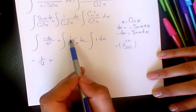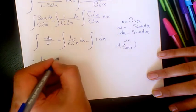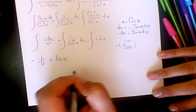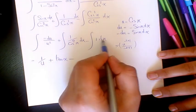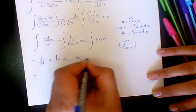Plus, the integral of 1 over cosine squared x dx, we had it before, is going to be tan x. And the integral of 1 dx is x, so plus a constant number.